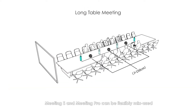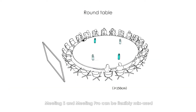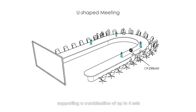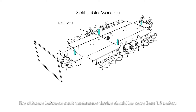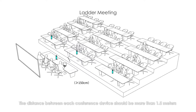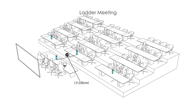Note: Meeting S and Meeting Pro can be flexibly mix-used, supporting a combination of up to four sets. The distance between each conference device should be more than 1.5 meters.